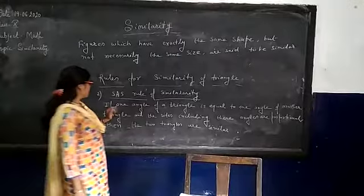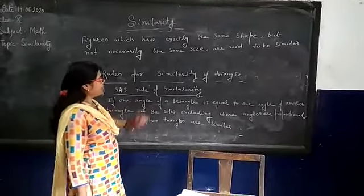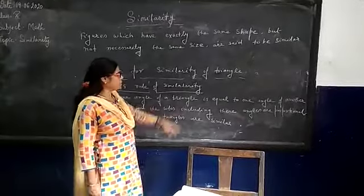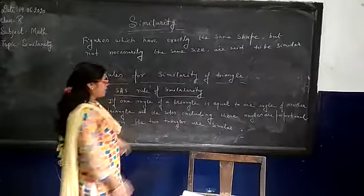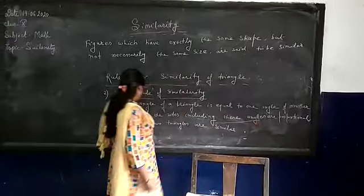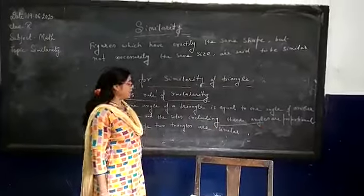Now this rule states that if one angle of a triangle is equal to one angle of another triangle, and the sides including these angles are proportional, then the two triangles are similar.